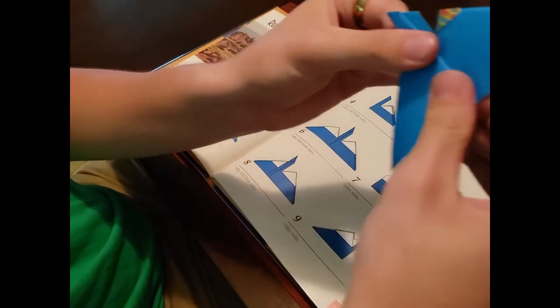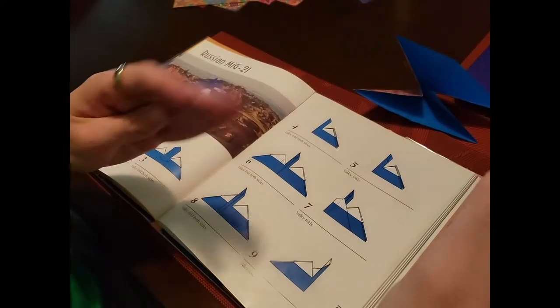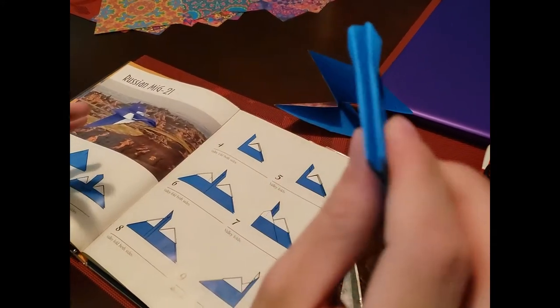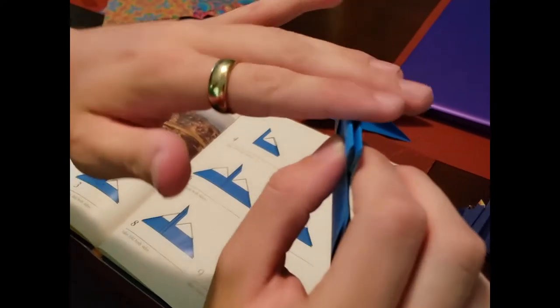And you're going to take your second piece, your second mountain, and fold it over the first mountain like so. And you should, what you have left is what looks like a standard paper airplane with nothing above.